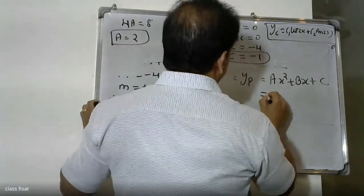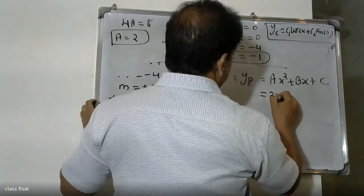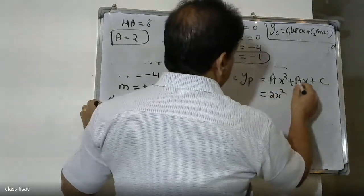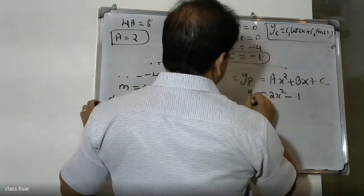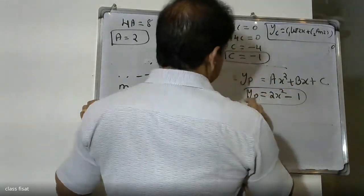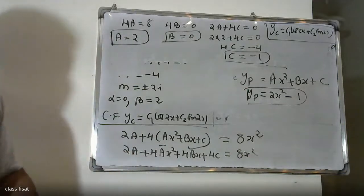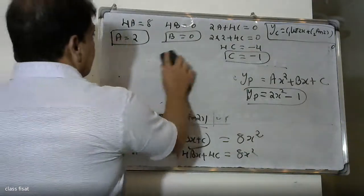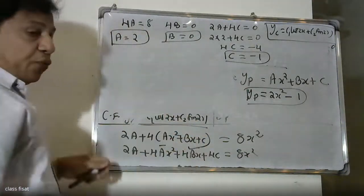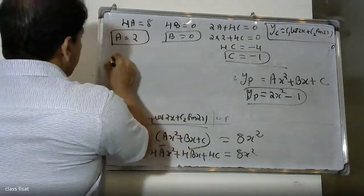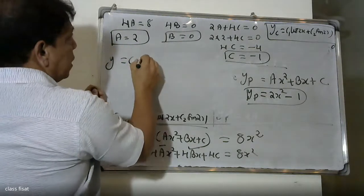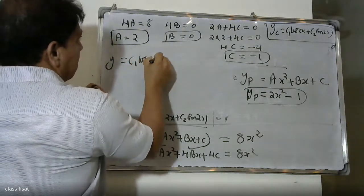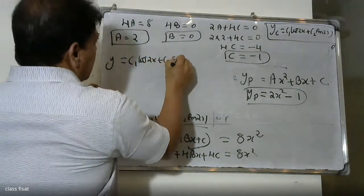Therefore the particular solution is yp = 2x² - 1. The general solution is y = yc + yp = c1·cos(2x) + c2·sin(2x) + 2x² - 1.